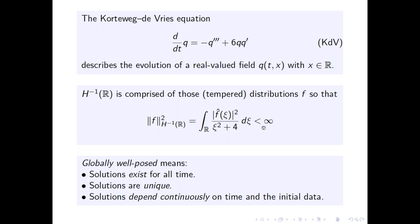We are interested in constructing global solutions to the KdV equation for initial data in H^{-1}. Global well-posedness for us means in the sense of Hadamard: solutions exist for all time, they are unique, and they depend continuously both on time and on the initial data.